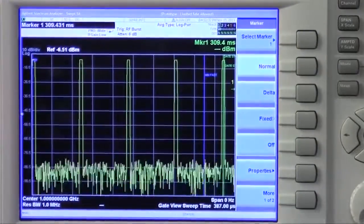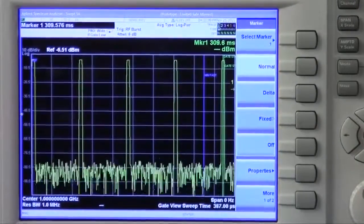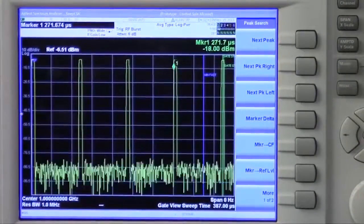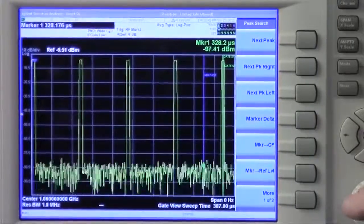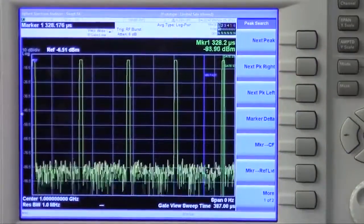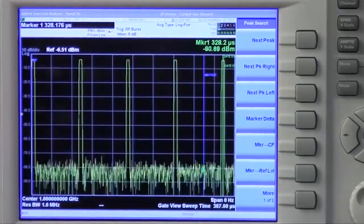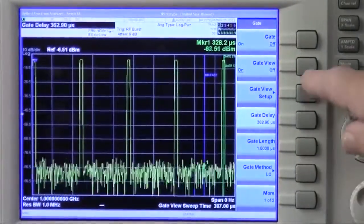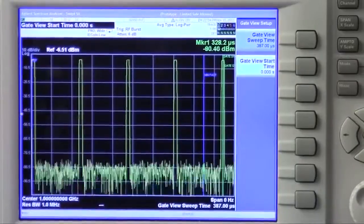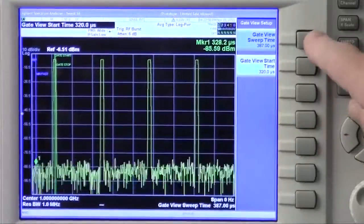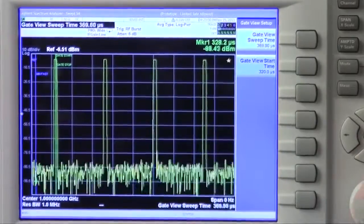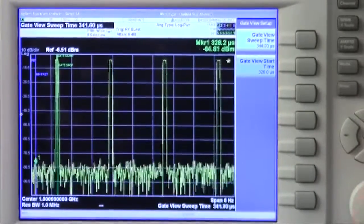If I turn on a marker and I move the marker to the min fast line, I can see that min fast is at about 328 microseconds. So let's set the gate view start time to be about 320 microseconds. When we do that,